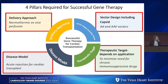The next two pillars are the disease model and the therapeutic target, and those also go hand in hand. The disease model we've been developing is a pig model for acute rejection in cardiac transplantation. The therapeutic target — what you're putting into the viral vector — depends on the application. While there are many applications for gene therapy in cardiac transplantation, we're focusing on minimizing the need for chronic immunosuppressive drugs.